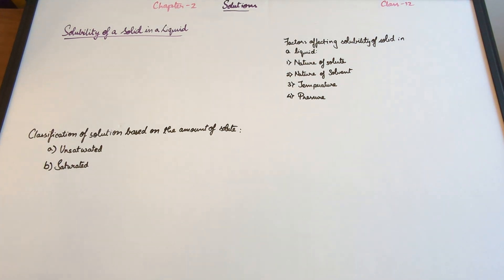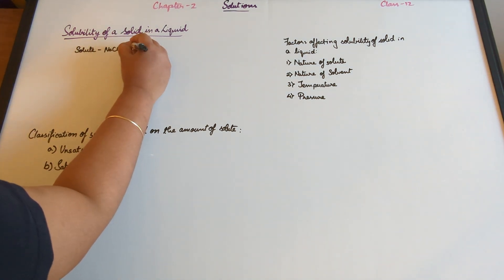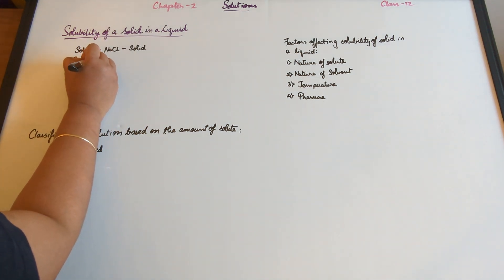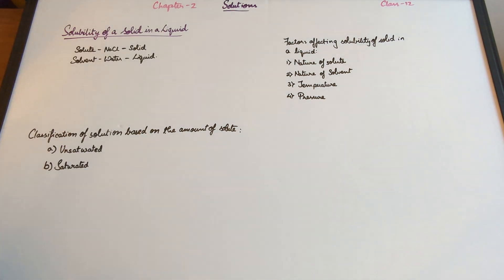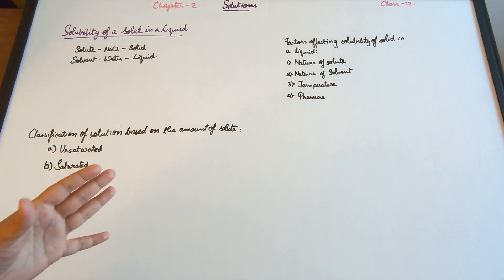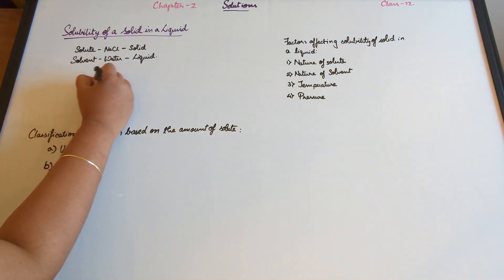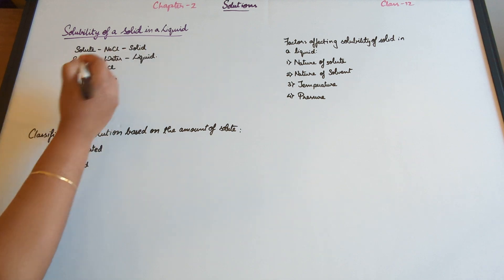In this video we are discussing the solubility of a solid in a liquid, and first we are going to talk about the various processes that happen when you mix a solid and a liquid. Let's take an example of a salt solution. Our solute here is sodium chloride — that's the solid. The solvent is water — that's the liquid. When you mix sodium chloride with water, you notice that it disappears, and this process of the solid getting dissolved into the liquid is called dissolution.